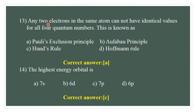Question number 13. Any two electrons in the same atom cannot have identical values for all four quantum numbers — one atom, two electrons, four quantum numbers. This is known as the Pauli exclusion principle. The correct answer is A.